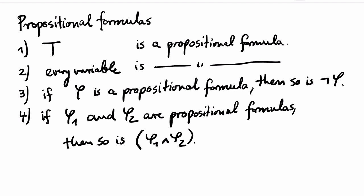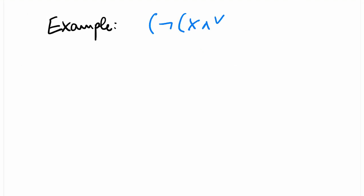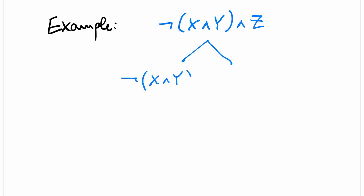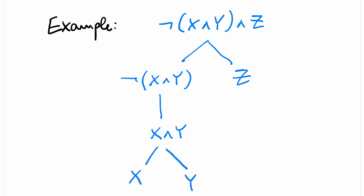The set of propositional formulas is precisely the set of strings that you can build like this. Formally, it is the smallest set of strings that satisfies rules 1 through 4. I will present an example of a propositional formula with variables X, Y, and Z. Note that if we keep track of how the formula was built inductively, this gives rise to a tree-like structure called the syntax tree, or sometimes the parse tree. Every propositional formula has a unique syntax tree.